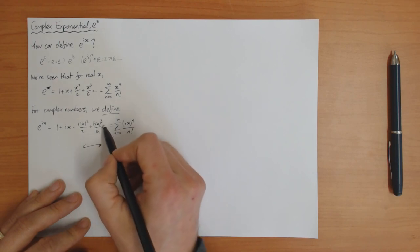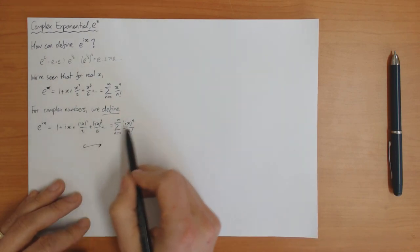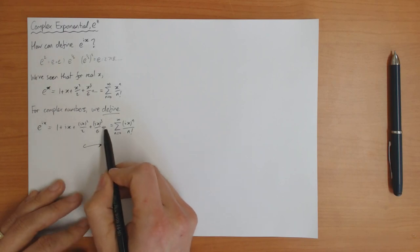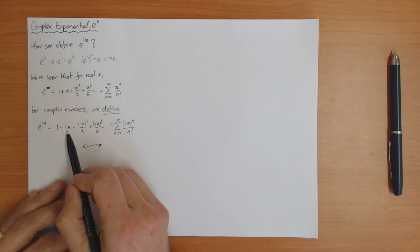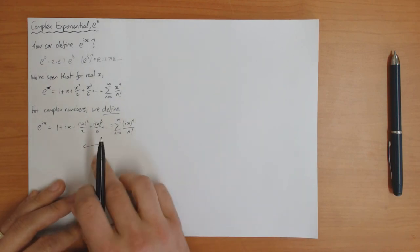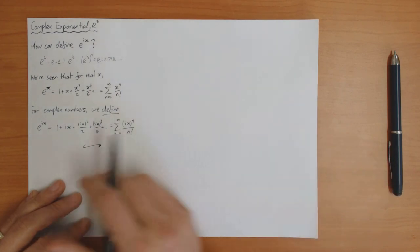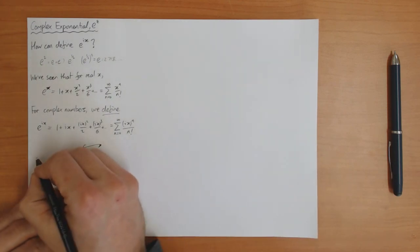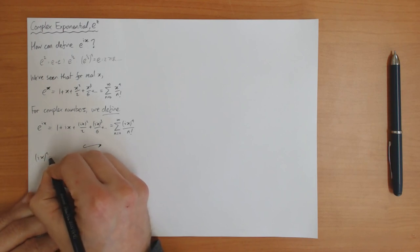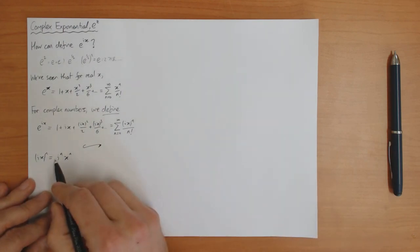The next term is ix to the power of 4, which equals x to the 4 — again real. So it turns out that in this sum, the even powers 0, 2, 4, 6 and so on correspond to the real part of the number, and the odd powers 1, 3, 5 and so on correspond to the imaginary part. To work this out in more detail, we need to compute ix to the power n, which is i to the n times x to the n — so what is i to the n?